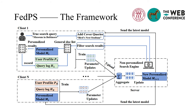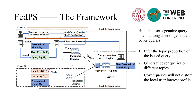This is the FedPS framework. The user enters a query on her own client. The client sends the issued query accompanied with several cover queries to the search engine. Then the personalized ranking model deployed on the client adjusts the document list of the real query and presents the personalized result to the user. The issued query, general document list, personalized document list, and the user's clicks are recorded in the local query log. We hide the user's general query intent among a set of unrelated cover queries on the server side. For example, a cover query Bird's Nest Stadium is added for the true query Museum in Baltimore.